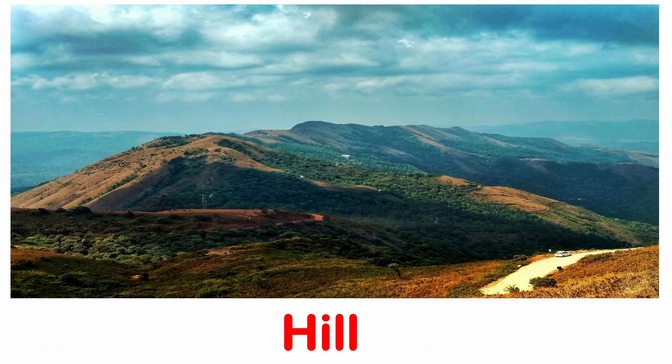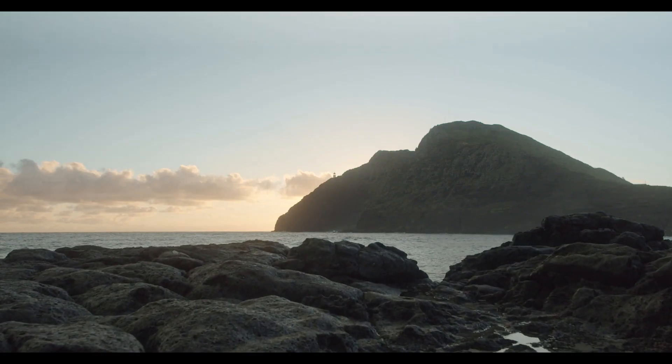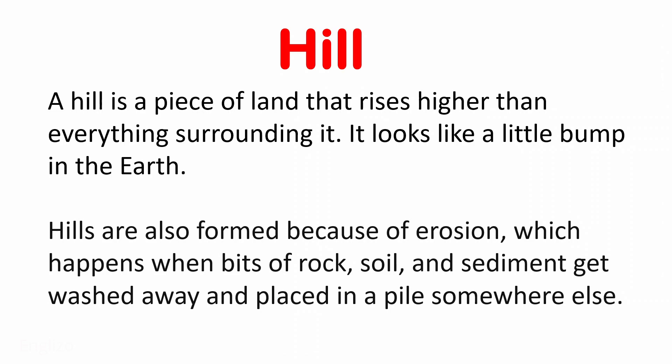Next is Hill. A hill is a piece of land that rises higher than everything surrounding it. It looks like a little bump in the earth. Hills are also formed because of erosion, which happens when bits of rock, soil, and sediment get washed away and placed in a pile somewhere else.